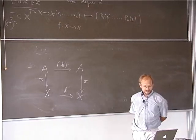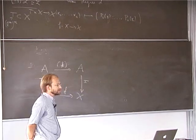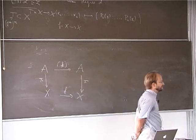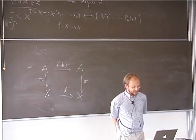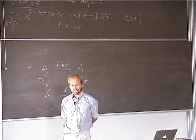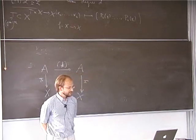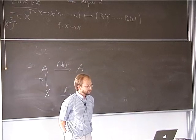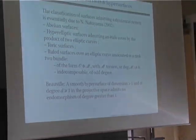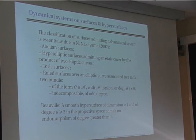For surfaces one has a quite precise classification — not of dynamical systems, but of surfaces admitting a dynamical system. This classification is essentially due to Nakayama and is quite recent. The only examples are: abelian surfaces where the map can only be multiplication by some integer; hyperelliptic surfaces, which admit an étale cover by the product of two elliptic curves and are still quotients of some abelian surface; toric surfaces; and ruled surfaces over an elliptic curve.